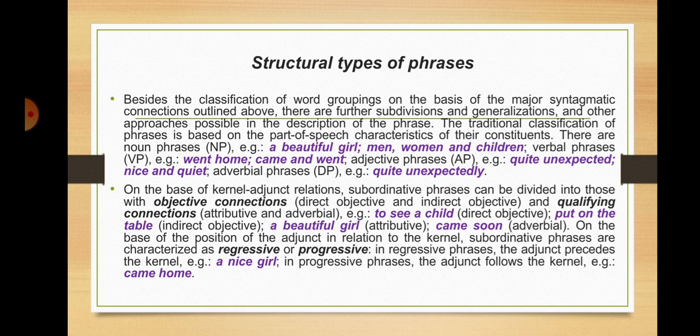For example: 'to see a child' is a direct-objective phrase; 'put on the table' is an indirect-objective phrase; 'a beautiful girl' is attributive; 'came soon' is adverbial. On the basis of the position of the adjunct in relation to the kernel, subordinative phrases are characterized as regressive or progressive. In regressive phrases, the adjunct precedes the kernel — for example, 'a nice girl,' where 'girl' is the kernel and 'nice' is the adjunct. In progressive phrases, the adjunct follows the kernel — for example, 'came home,' where 'came' is the kernel and 'home' is the adjunct.